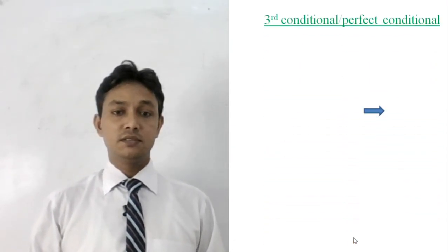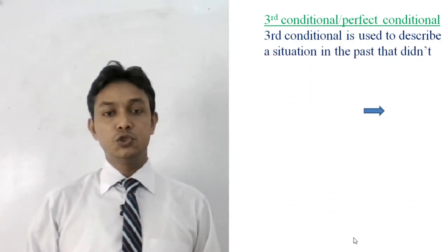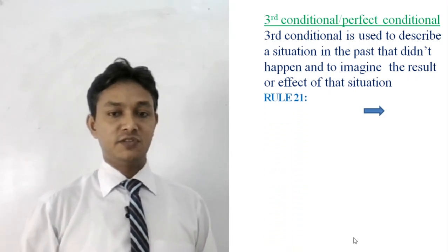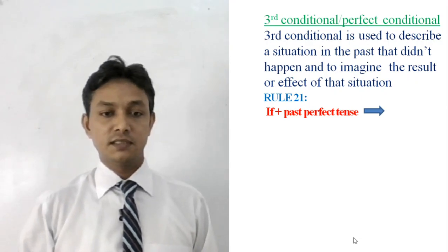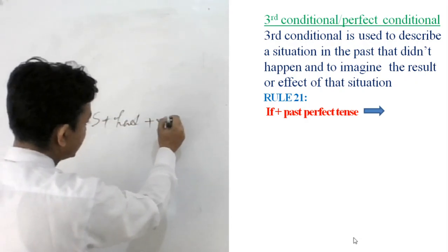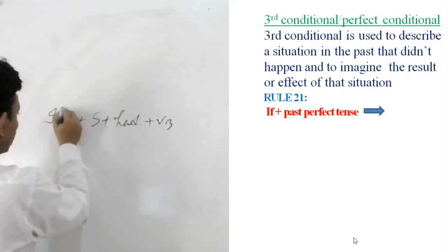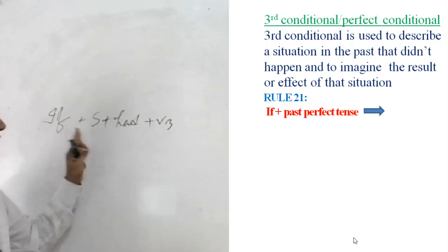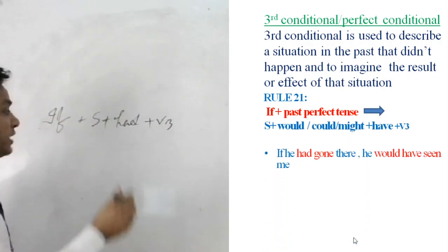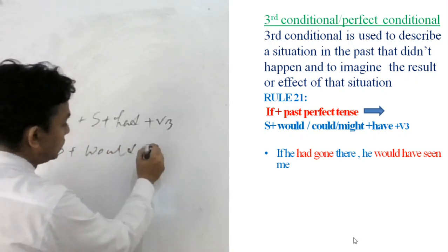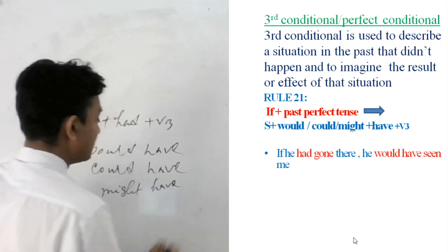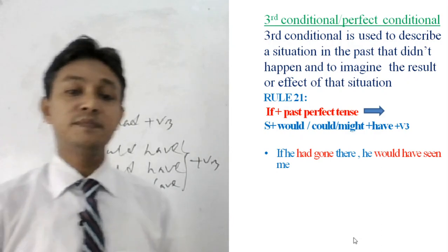Next is third conditional, also called perfect conditional. Third conditional is used to describe a situation in the past that did not happen, and to imagine the result or effect of that situation. The structure is: if plus past perfect (subject plus had plus V3), and the main clause is written with would have, or might have, followed by V3 — the past participle form of the verb.